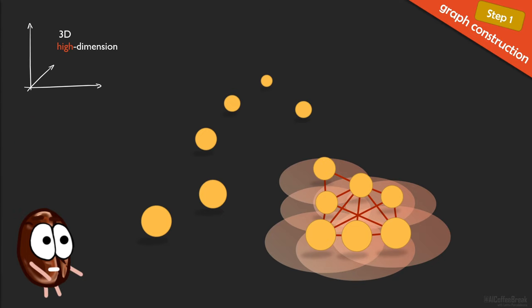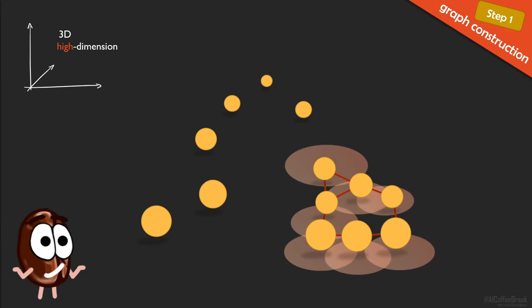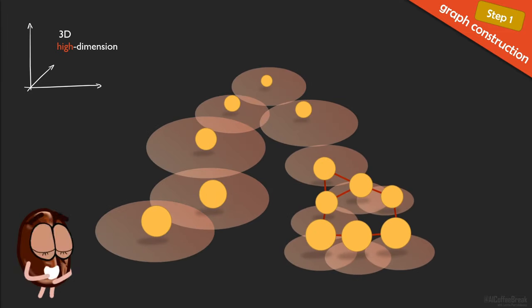Okay then, so if we have these two problems with a fixed radius, then let's use a variable radius instead. This choice is also mathematically supported by the definition of a Riemannian metric on the manifold, but do not worry about that. Just keep in mind that there is math proving that the choice of a variable radius does not cause any trouble. So now the radius is greater in low-density regions and smaller in high-density regions.